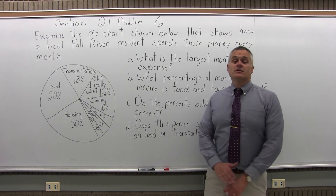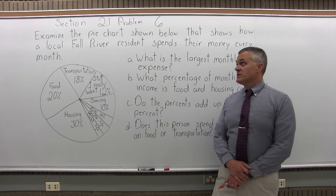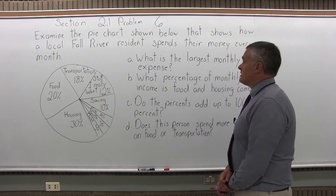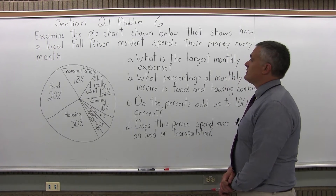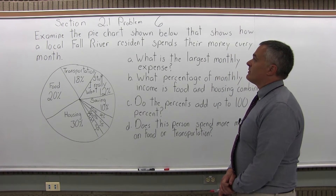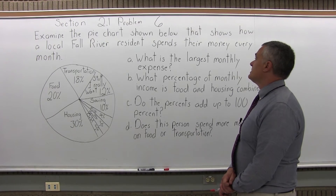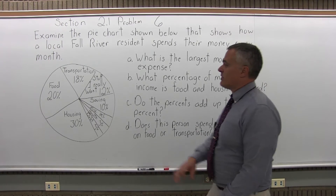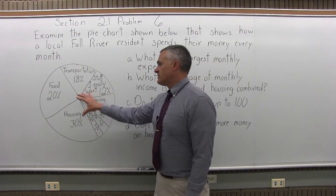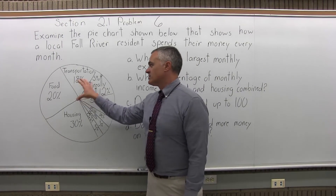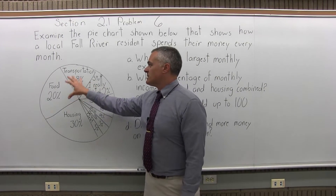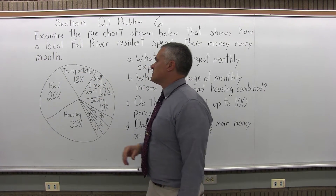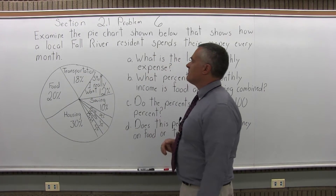This is Section 2.1, Problem 6. It says: examine the pie chart shown below that shows how a local Fall River resident spends their money every month. We have a pie chart broken into different wedges with the percentages, and you have the expenses — food, housing, transportation, etc.